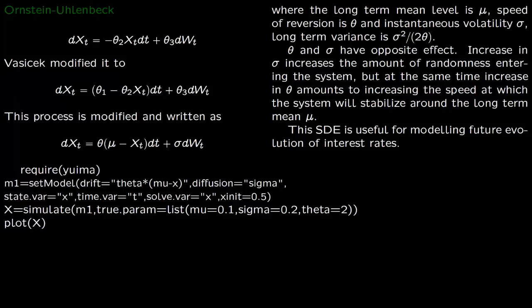We now talk about Ornstein-Uhlenbeck Stochastic Differential Equation. This is given as dXt equals minus theta 2 Xt dt plus theta 3 dWt. So this is the Brownian motion part.